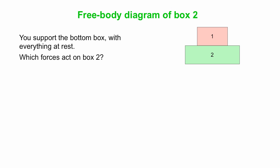On to box two. So box two also interacts with the Earth. There's a downward force of gravity, M2G. Box two is interacting with you. You've got your hands supporting box two from the bottom. You're applying an upward normal force on box number two.